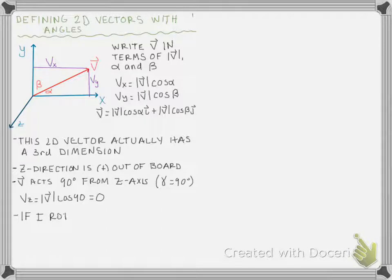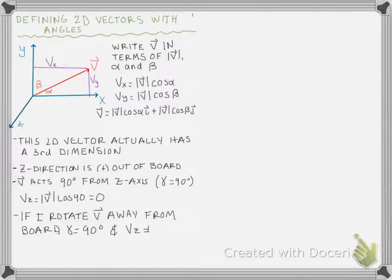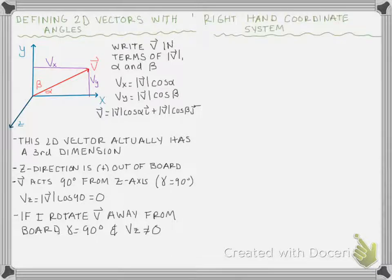However, if I rotate that vector v away from our two-dimensional space, then the angle is no longer 90 degrees, and vz will not be equal to zero. Gamma is not 90 degrees, and our vector in the z direction will no longer be equal to zero. Because we live in a three-dimensional world and many of our engineering problems are three-dimensional, the rest of this video introduces the three-dimensional world and how to get your brain to think in three dimensions.